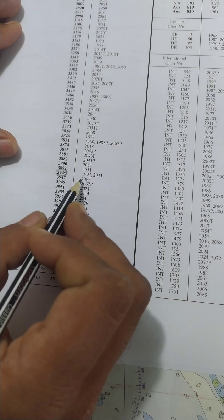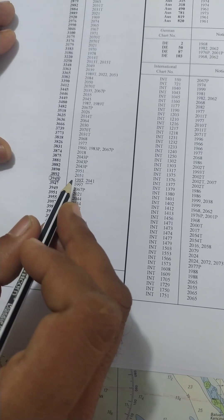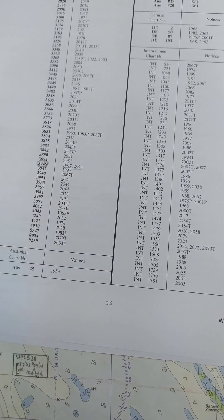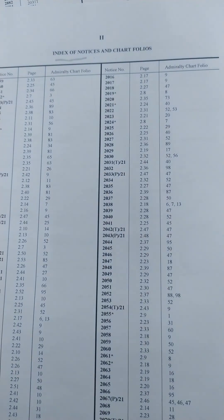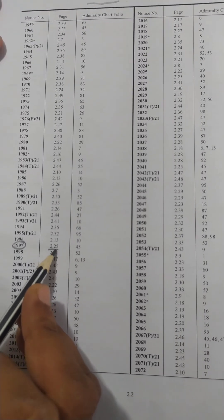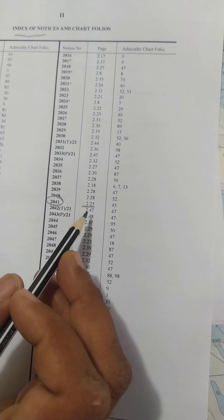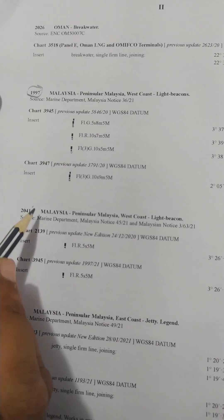The correction numbers I got for chart 3945 were 1997 and 2041. If you know how to use it, you can go directly to the Malaysia section since corrections are arranged by geographical index. If you are confused, you can always go back to the index of notices and chart folios and look up notice 1997 — the page number of that correction will be given there. Similarly for 2041, the page number is given there. Both are on page number 2.25, so I have taken a printout of page 2.25, and corrections 1997 as well as 2041 are listed on it.